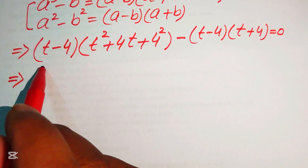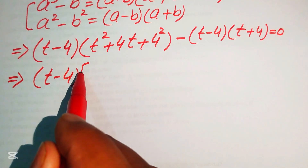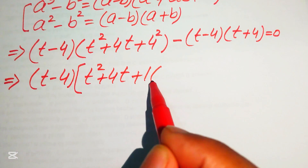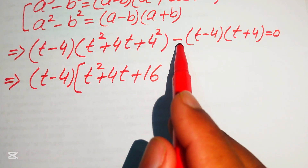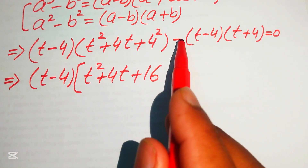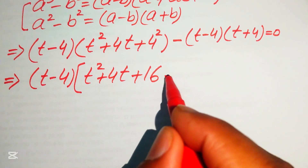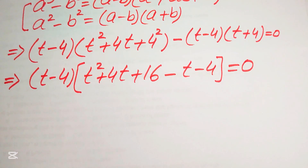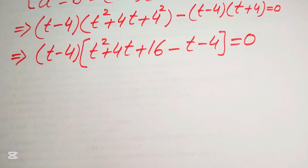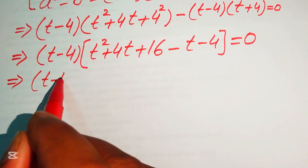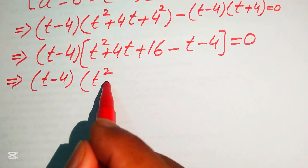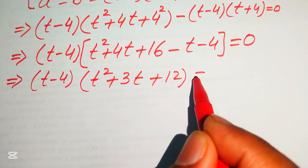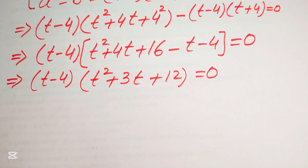Now we take (t minus 4) as a common factor. The remaining terms from the first bracket are t squared plus 4t plus 16, and from the second we get minus (t plus 4), which distributes to minus t minus 4. Adding like terms: 4t minus t gives 3t, and 16 minus 4 gives 12. So we have (t minus 4)(t squared plus 3t + 12) equals 0.